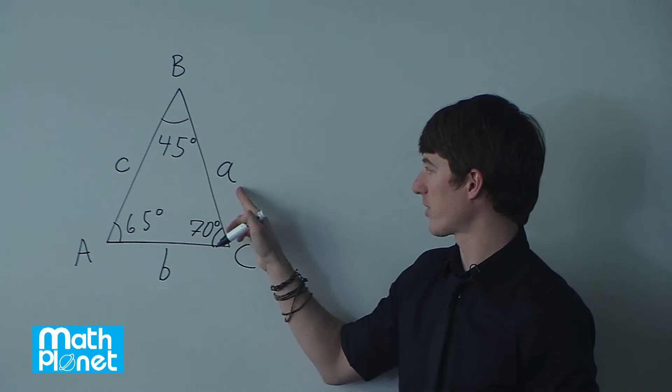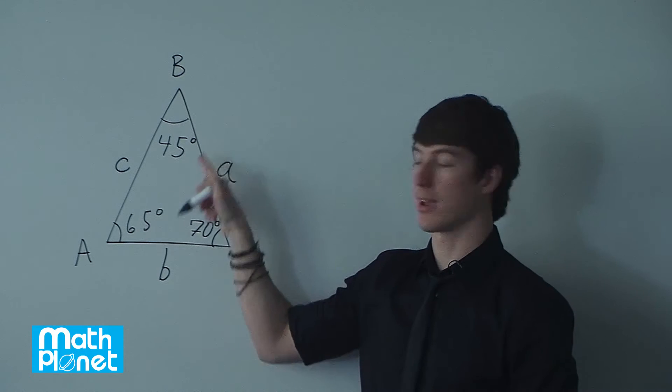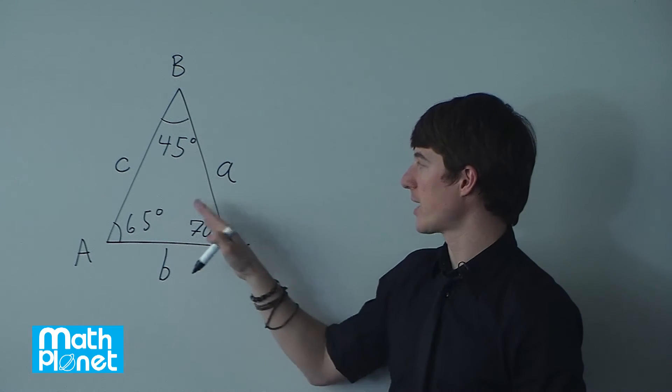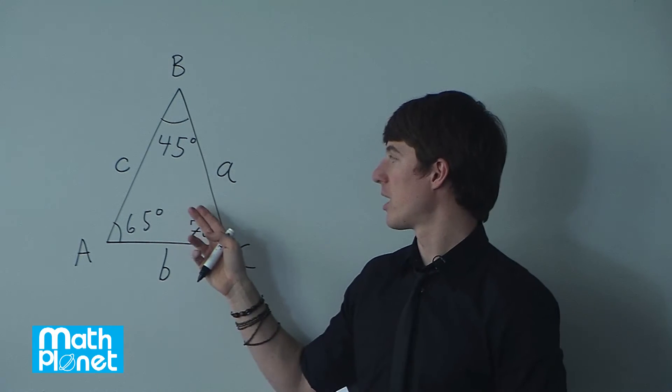I've written the sides here as lowercase letters of their opposite angles. So this side, lowercase a, is corresponding to this angle A. So to find out which is the shortest side, it's simply corresponding to the angle that's the smallest.